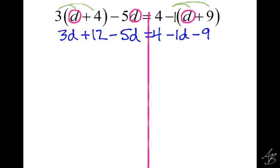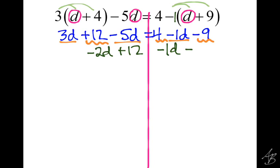Now we combine like terms. 3D minus 5D gives us negative 2D. The 12 doesn't combine with anything, so we bring it down. On the other side, negative 1D doesn't combine with anything. The 4 and the negative 9 combine to give us negative 5. Now we've simplified both sides, but we still have D's on both sides, so we need to get rid of one. We want to get rid of the smaller one — negative 2D is smaller than negative 1D because negative 2 is farther to the left on the number line.